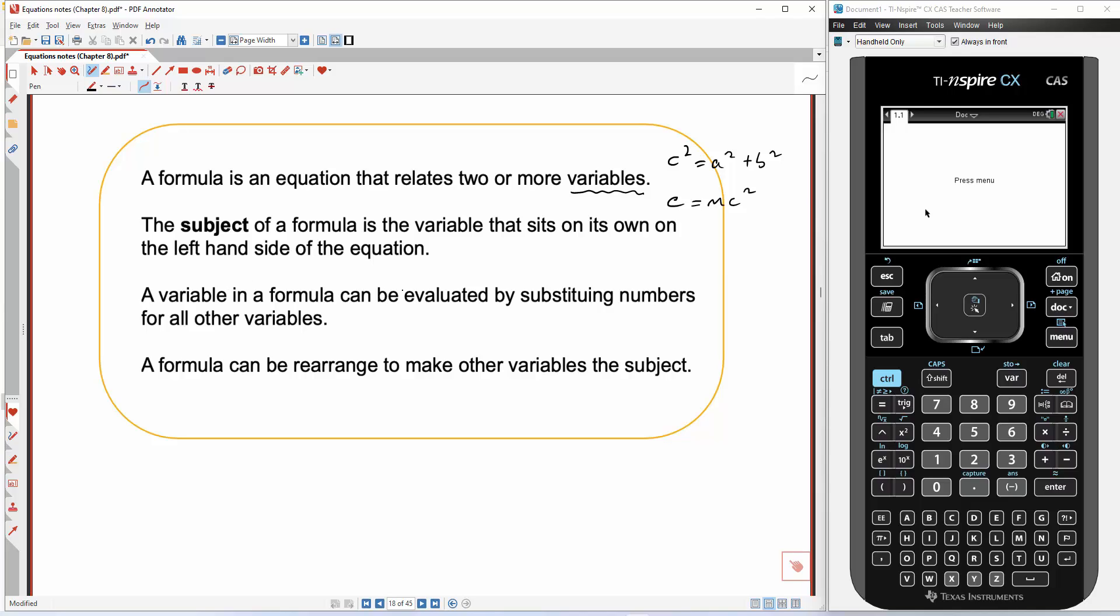A variable in a formula can be evaluated by substituting numbers for all other variables. So what we can do is work out what e is if we know what m and c is. A formula can be rearranged to make other variables the subject. So in this case here, we might have m that we want as the unknown, or we did this several times with Pythagoras's theorem. We might have a as the unknown, or b as the unknown.